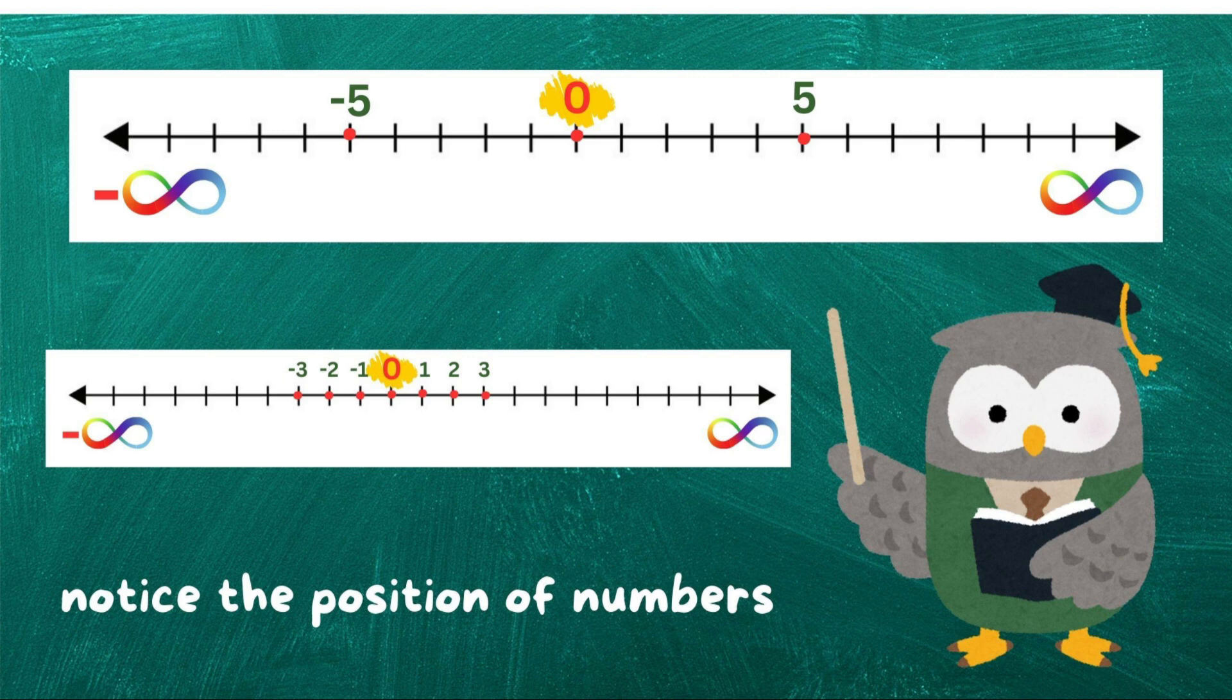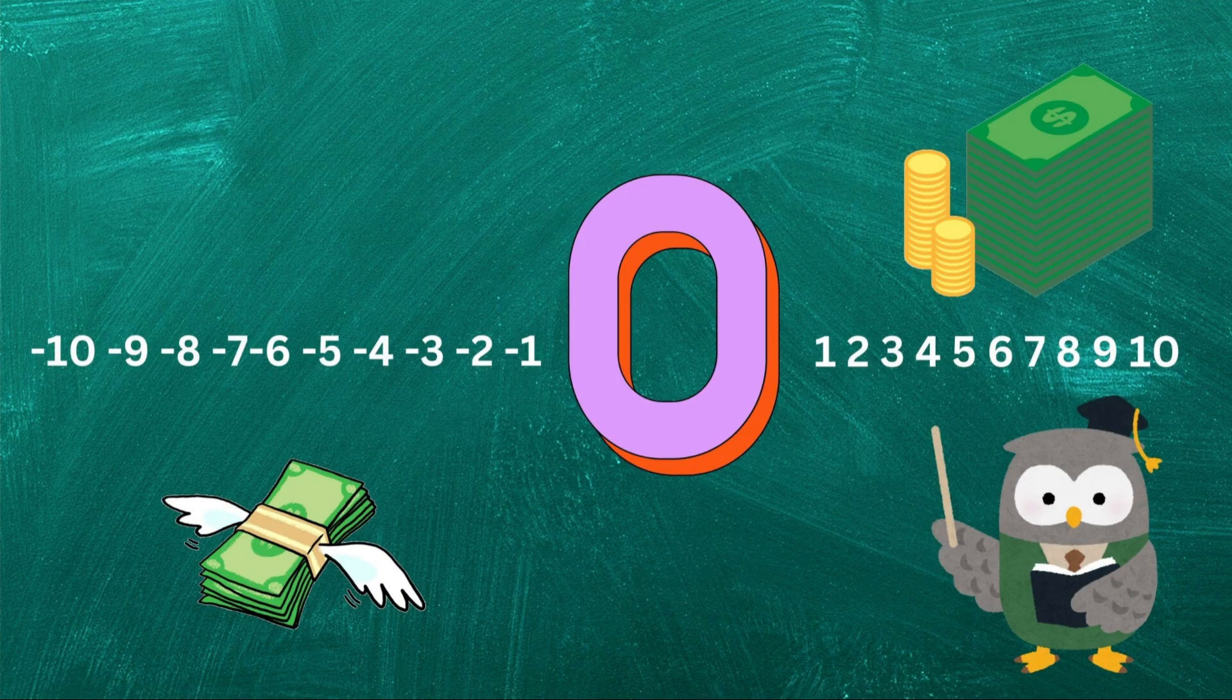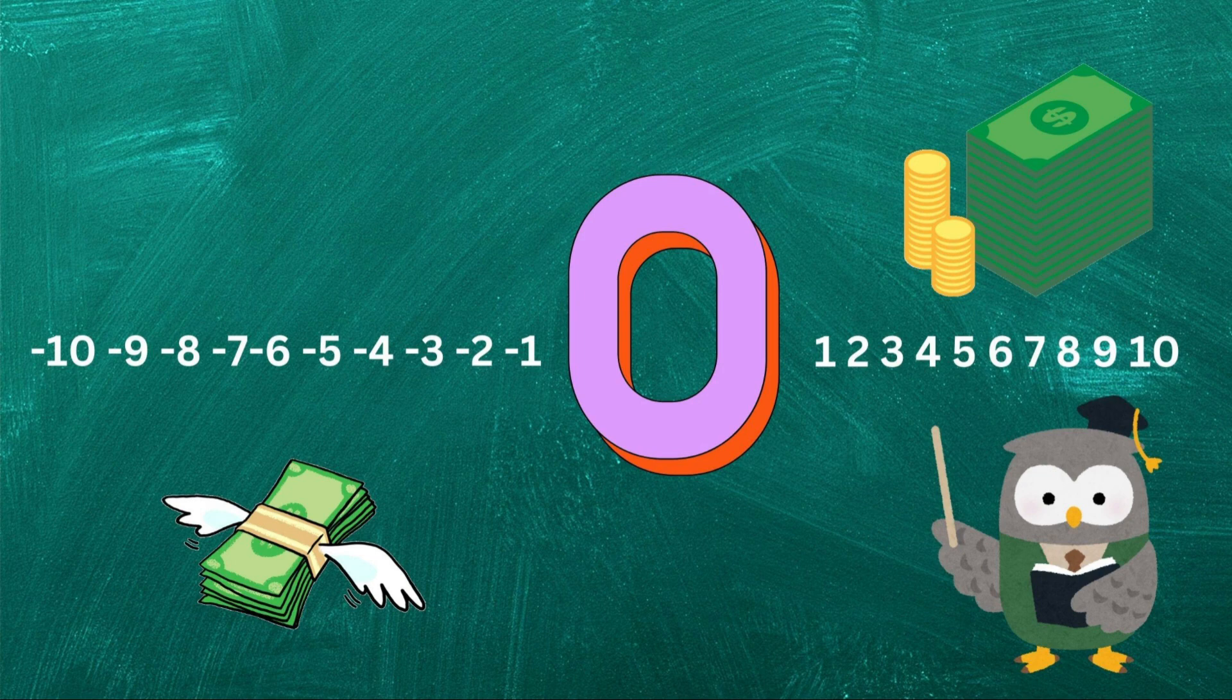Without zero, we wouldn't have a reference point to separate positive and negative values. It helps us understand distance and direction. For instance, if you owe someone $10, you can think of it as being 10 units below zero, which helps you visualize how much you need to get back to zero, or balance.